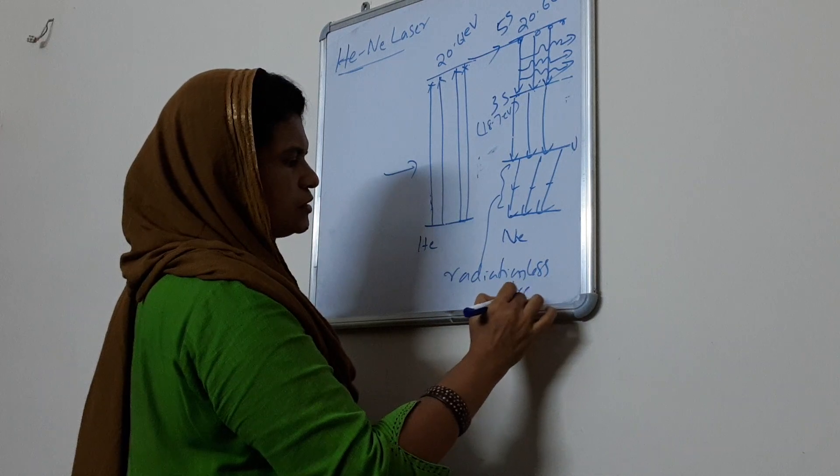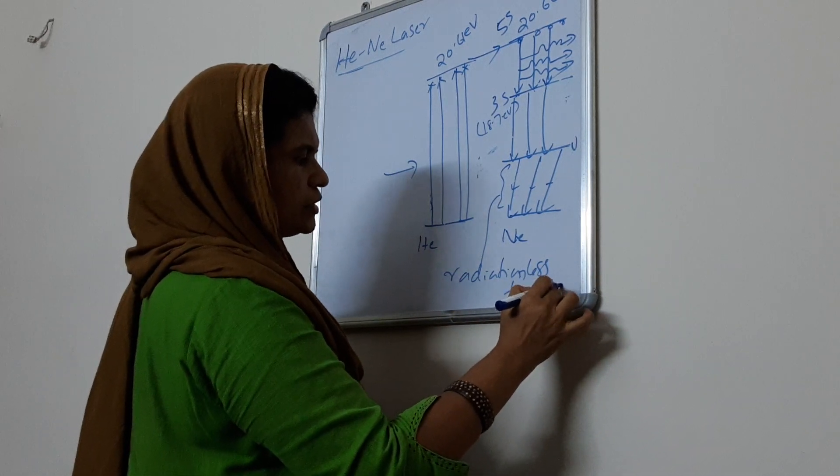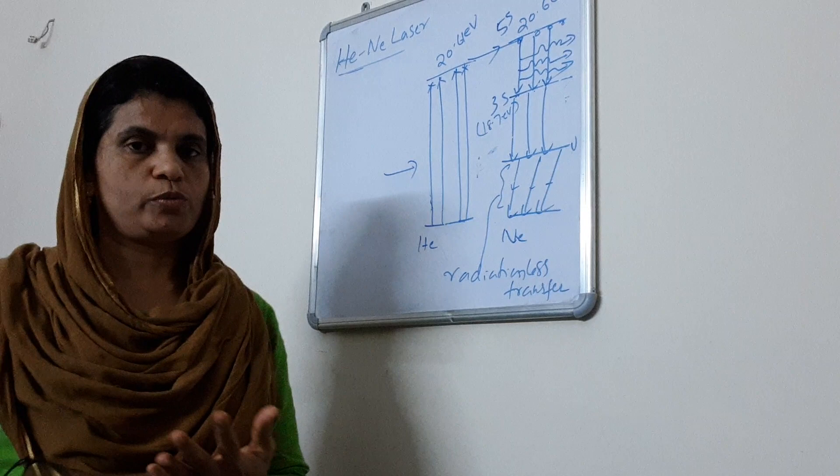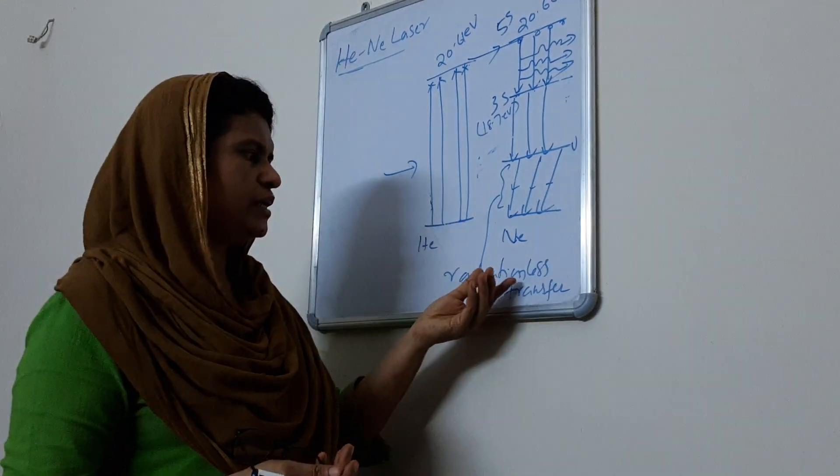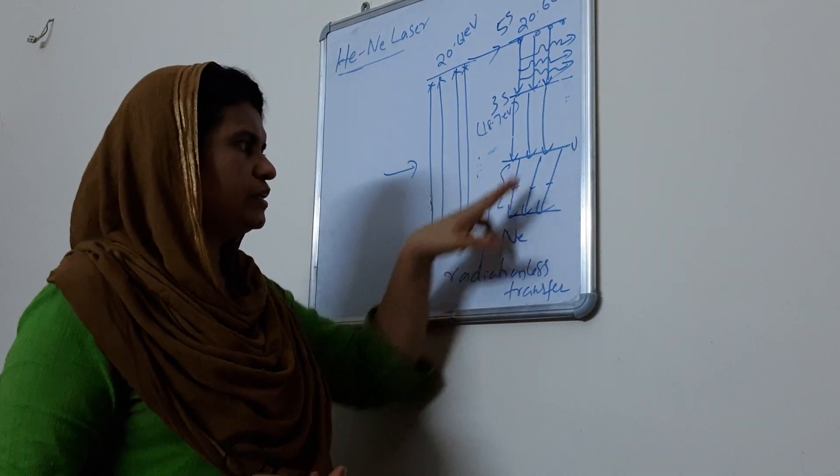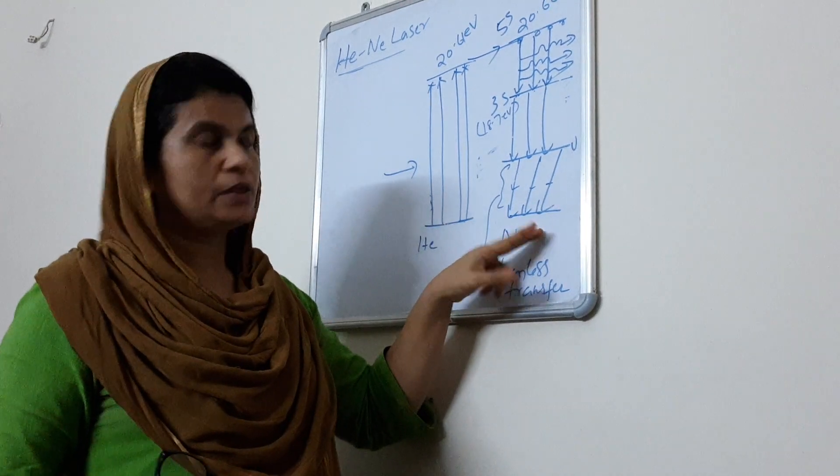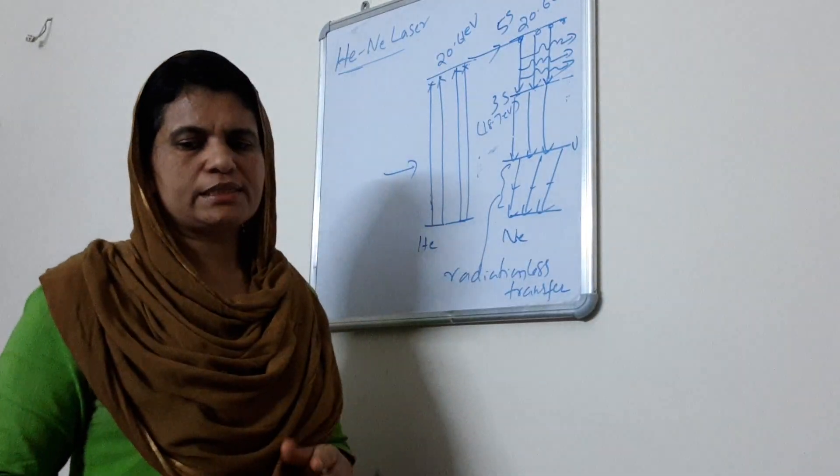That means the transfer of photons through the walls of the tube. The tube is called radiation-less transfer. This is the ground state. This is the ground state. This is the Helium Neon laser.